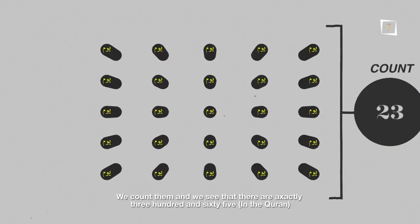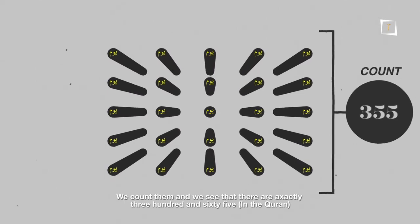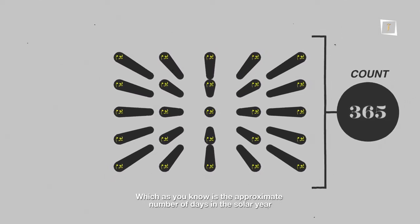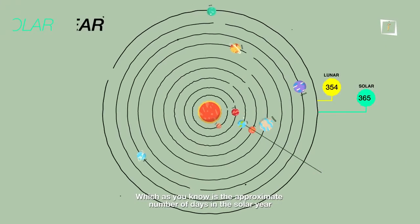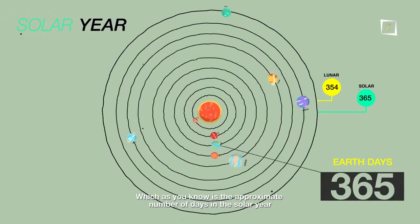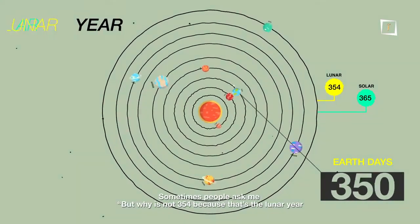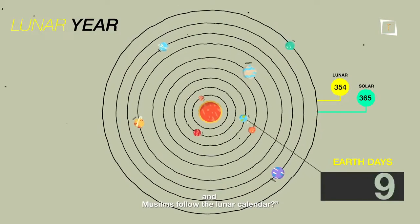we count them and we see that they are exactly 365, which as you know is the approximate number of days in the solar year. Sometimes people ask me: why is it not 354? Because that's a lunar year,